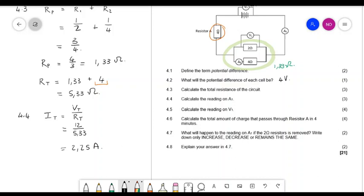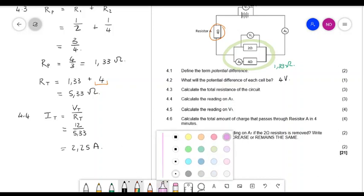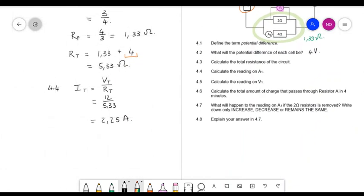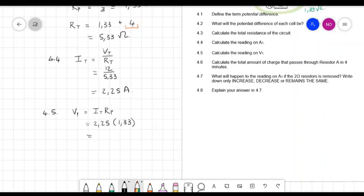Now I ask you for the reading on voltmeter 1. Now voltmeter 1 is here by the parallel part. So there's more than one way to do this. You can either go and calculate the potential difference being spent on that resistor and then just subtract that from 12. Or you can say we do know the resistance of that part of the circuit. So in that part of the circuit we know that the resistance is 1.33. So I'm going to say V parallel is equal to I total, because the total current flows through it. The total I splits up between my top and my bottom, but in total the whole circuit's current flows through the circuit. And then I'm just going to look at the parallel part. So the total current is 2.25 and the resistance of that part is 1.33.